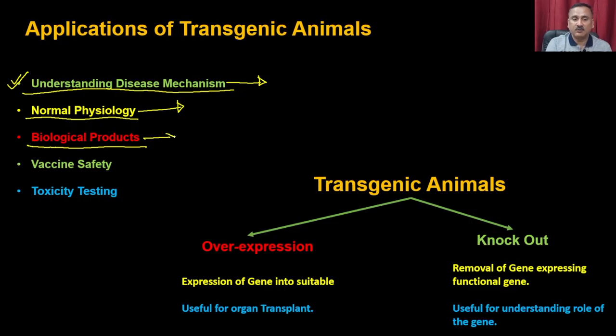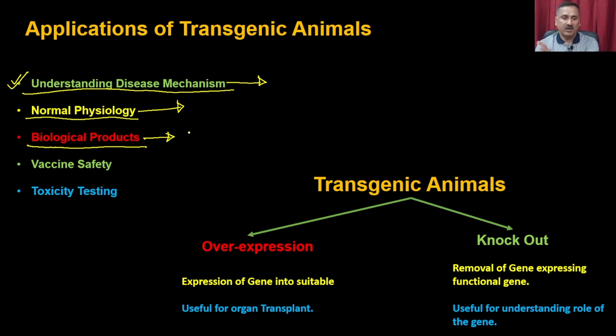Transgenic animals can also help in producing biological products — you can generate transgenic animals that give a particular desirable product. They can also be used for vaccine development and toxicity testing. In cases where you cannot test a product directly on humans, you can develop humanized animals — transgenic animals that mimic human physiology — and perform toxicity testing on those animals.